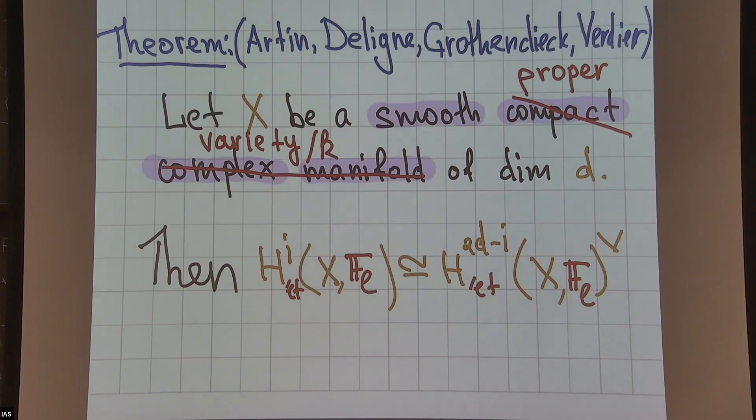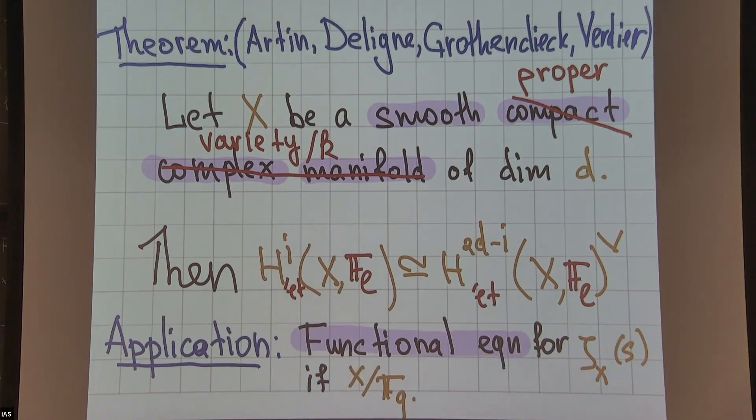Again there is a theorem which is essentially the same - you just need to change compact with proper, which is essentially the algebraization of compactness in the algebraic setting. You need to change from complex manifold to smooth variety, and then you have exactly the same result but with étale cohomology instead of singular homology groups. In particular, it gives you the same consequences as in topology: étale cohomology groups are concentrated in degrees from zero to twice the dimension, the top cohomology group is one-dimensional if X is connected, and you have equality of dimensions. In the algebraic situation it's slightly more interesting because you can apply it with different fields. In particular, we can leverage this information in arithmetic, and one of the consequences is the functional equation of the zeta function of varieties over F_q.